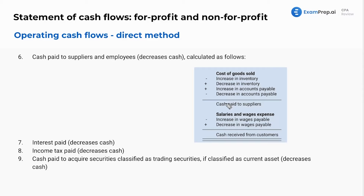Same with cash paid to suppliers — we are going to take into account the net effect of the increase or decrease in inventory. What's our journal entry here? This journal entry is going to be a debit to inventory to increase your asset, and a credit to cash — so that's cash out the door. However, if your inventory is going down, we're going to increase our cash balance. Same with accounts payable — this is cash out the door once you pay it down.